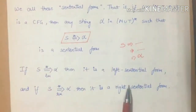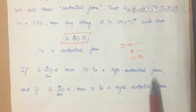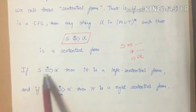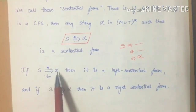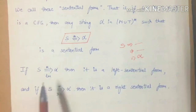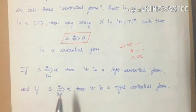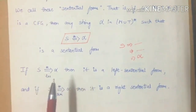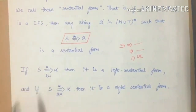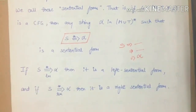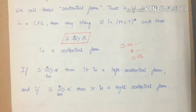Now we have two types of sentential forms: left sentential form and right sentential form. We represent left sentential form as S deriving alpha in 0 or more steps, where LM means left sentential form. This means when we apply the production rules, we replace the leftmost non-terminal. So we get alpha — the left sentential form.